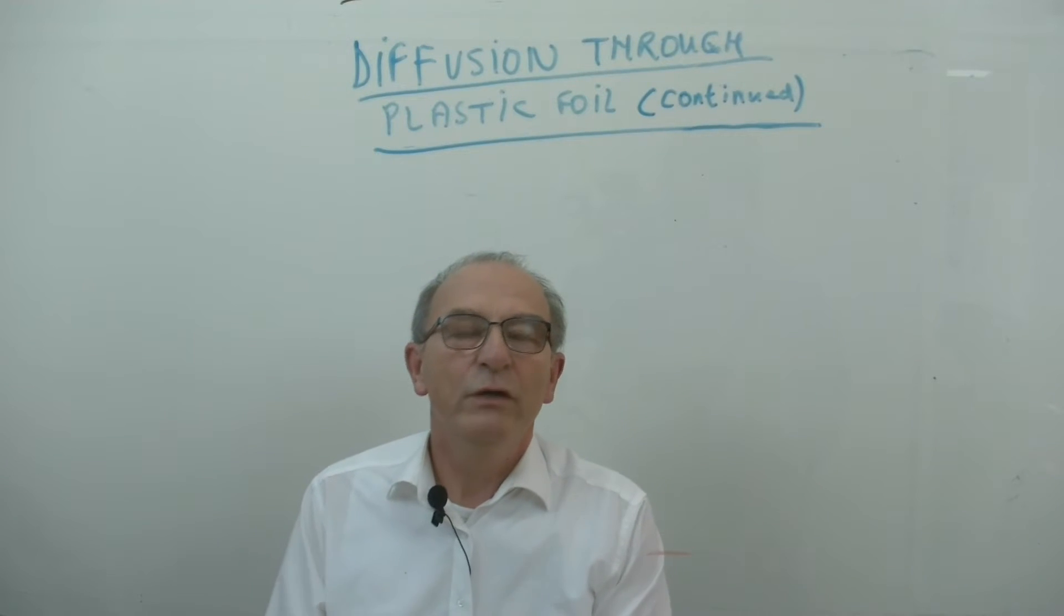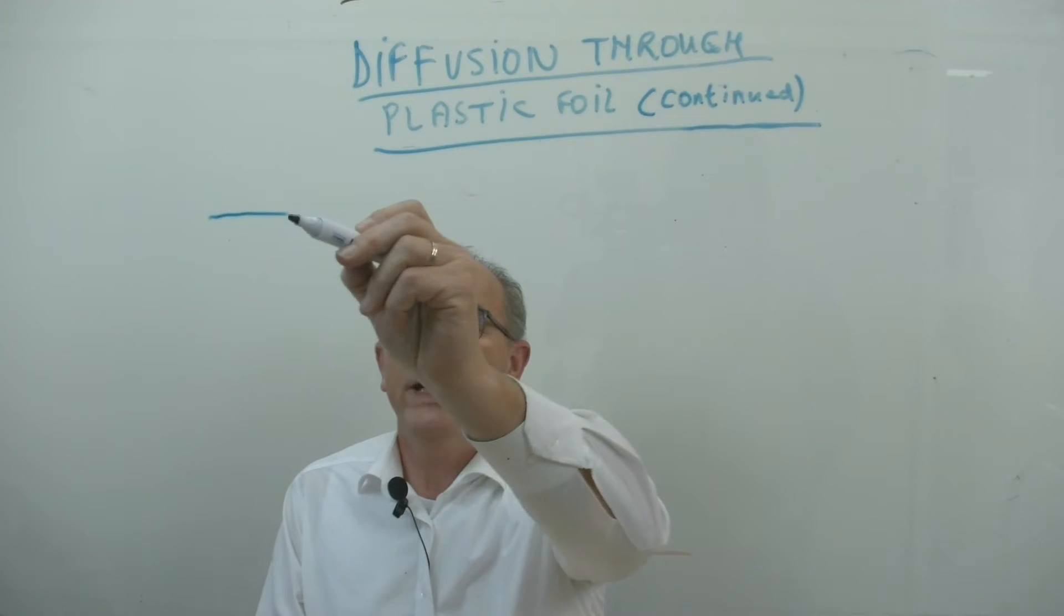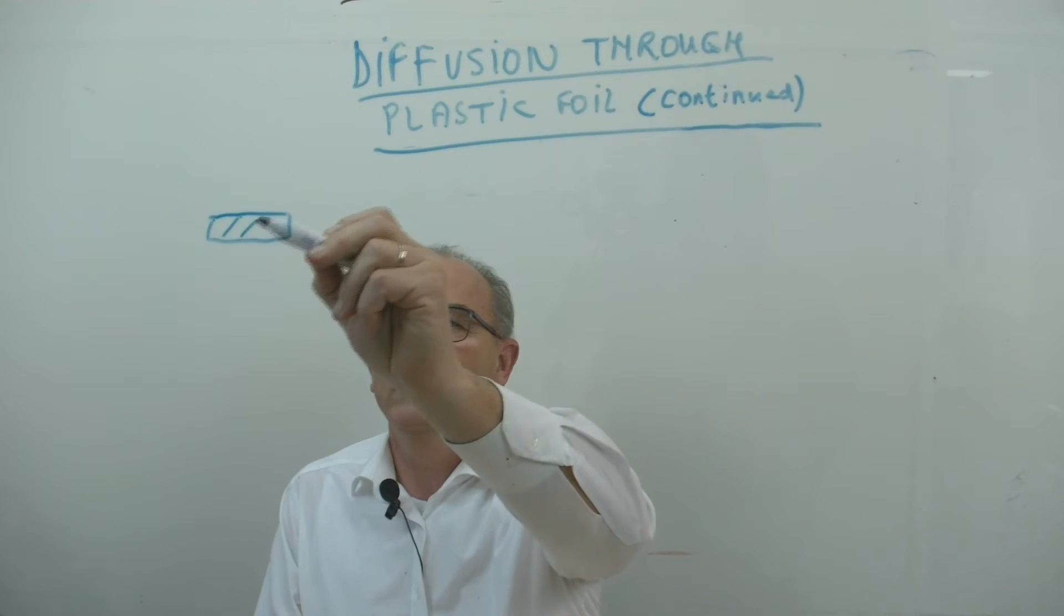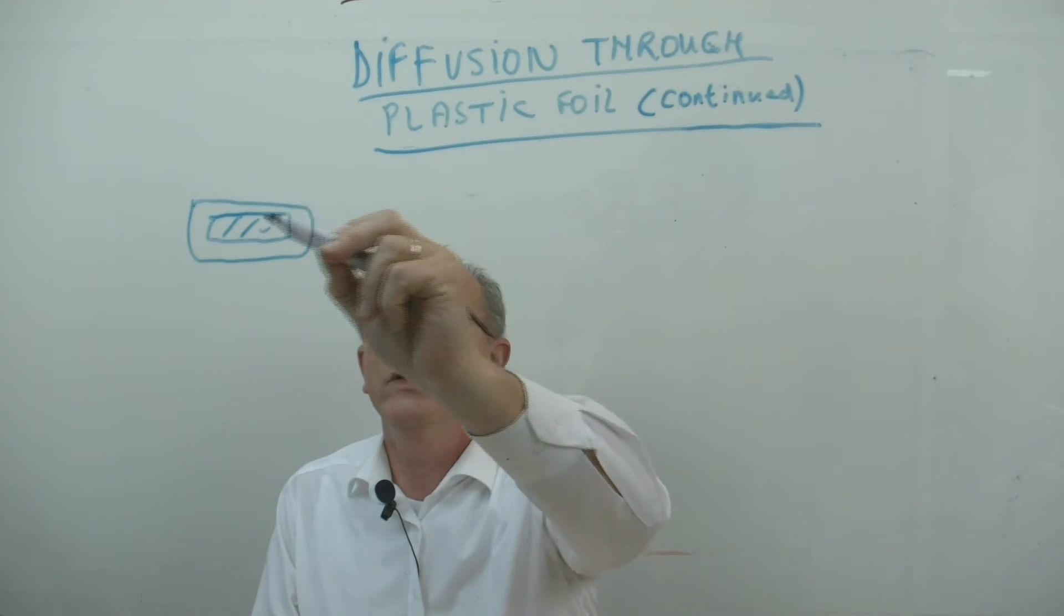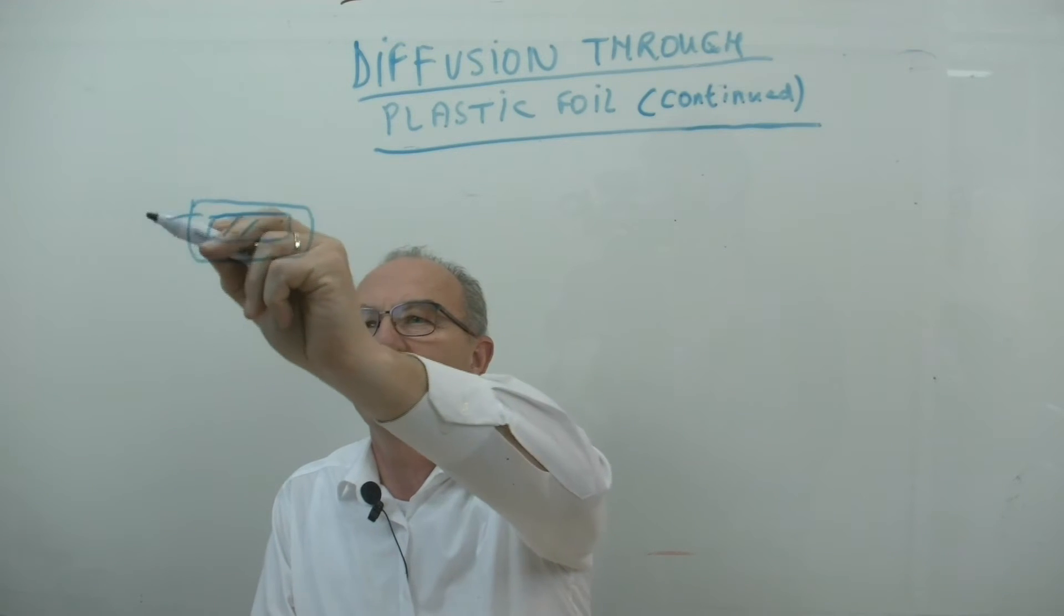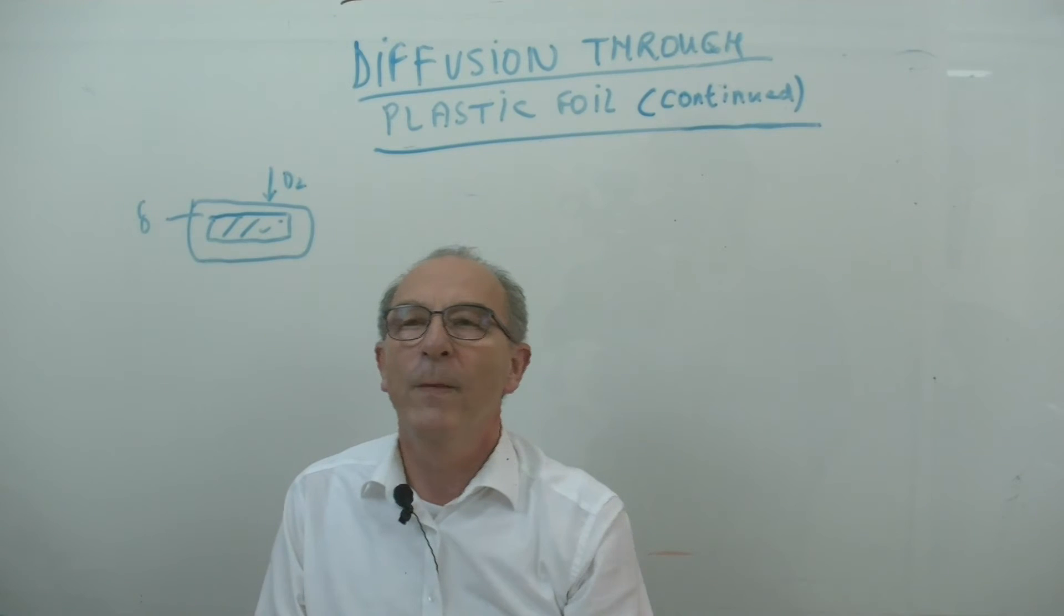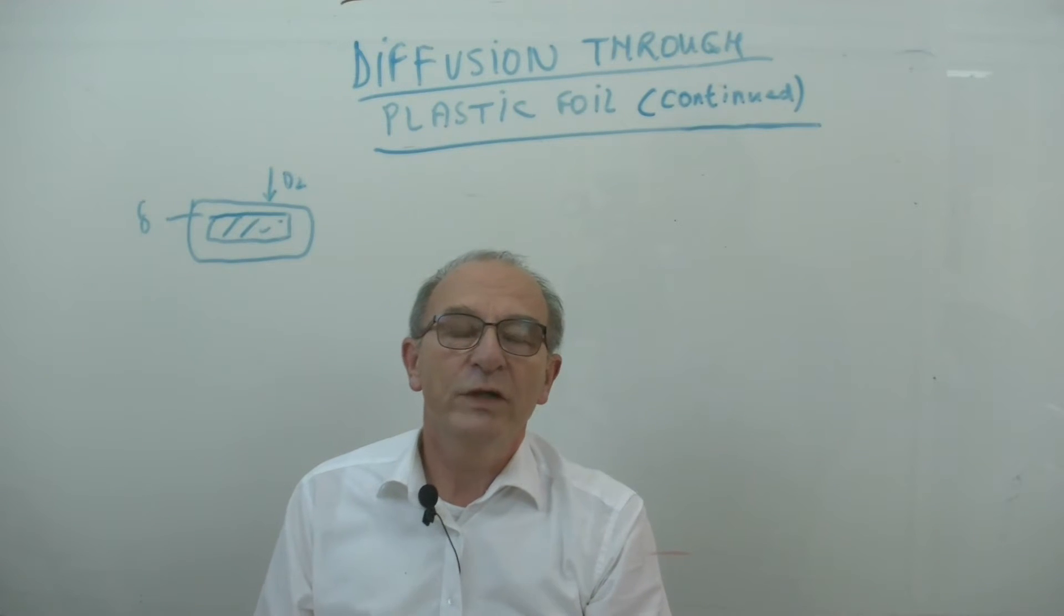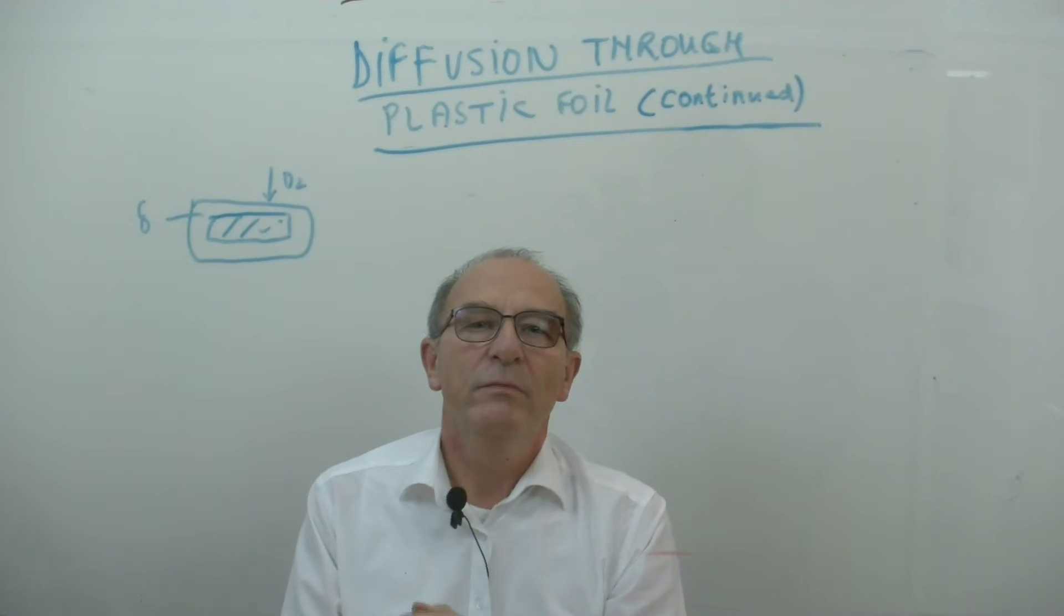In the previous example, we looked at a pharmaceutical product that's packed in a flat plate. So we had here the product with a foil around it, and this foil had a certain thickness. And we looked at the diffusion of oxygen into the foil. We started with Fick's law. And I want to illustrate that you can also apply the same methods to different geometries.